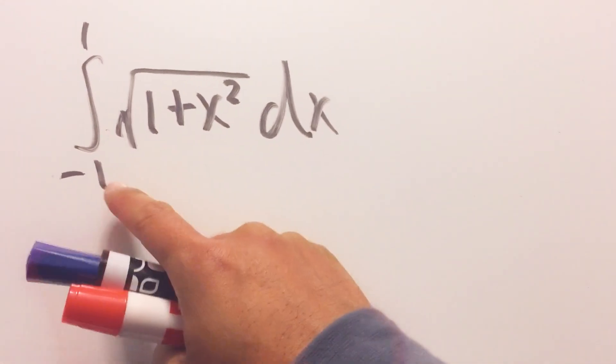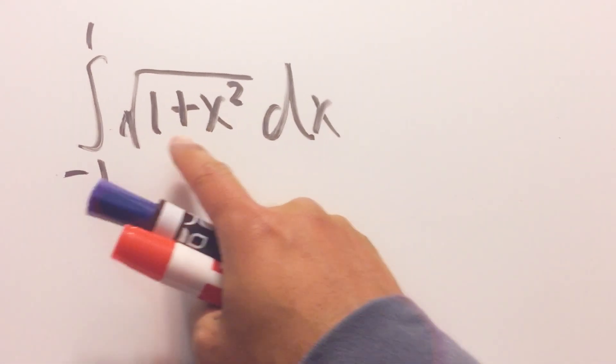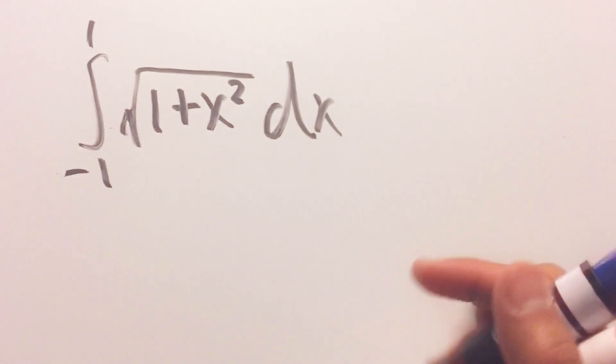Let's do some math for fun and here I have this integral from negative 1 to 1 square root of 1 plus x squared dx and this is what I'm going to do.